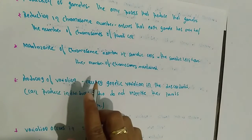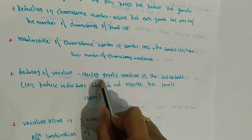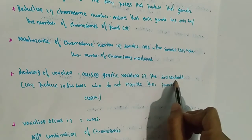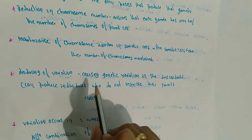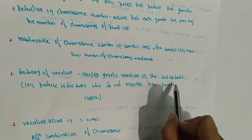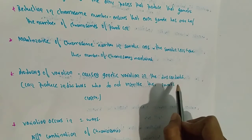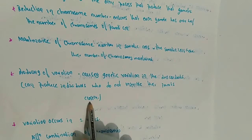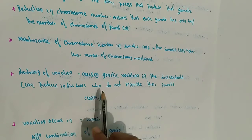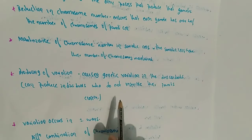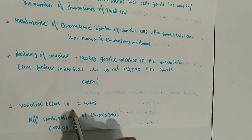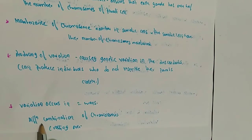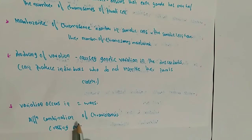Meiosis produces variations, causing genetic variation in the descendants. Descendants are individuals who belong to certain ancestors. This can produce individuals who do not closely resemble their parents. Variations occur in two ways: different combinations of chromosomes, and crossing over — the interchanging of chromosomes — which causes genetic changes.